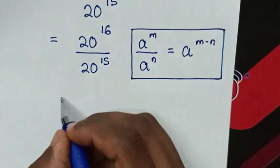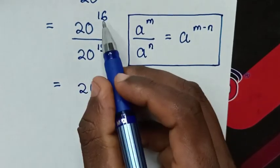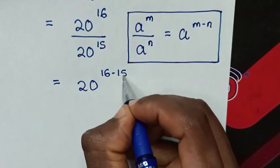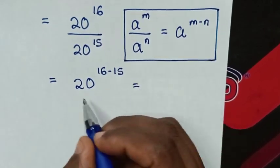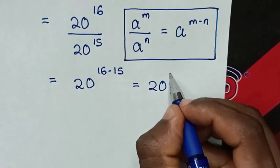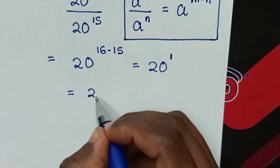So it will be equal to common base of 20 power of 16 minus 15. Then it will be equal to 20 power of 1. So it will be equal to 20 power of 1 is same as 20.